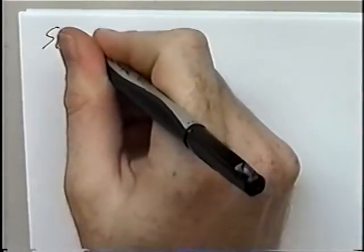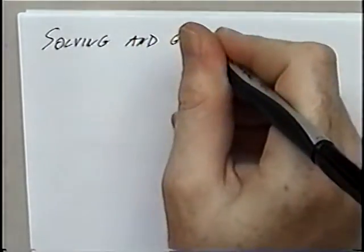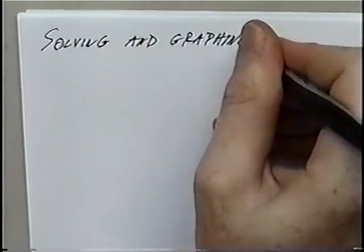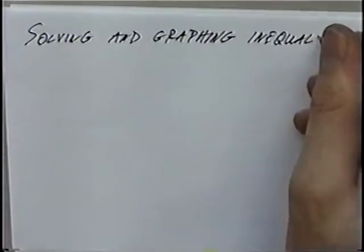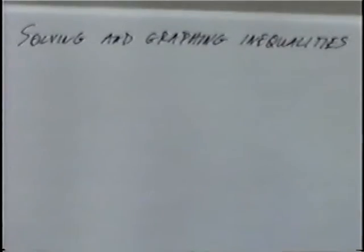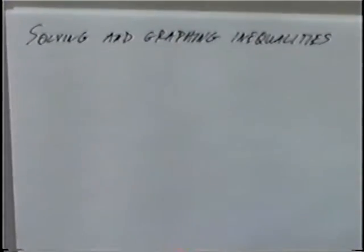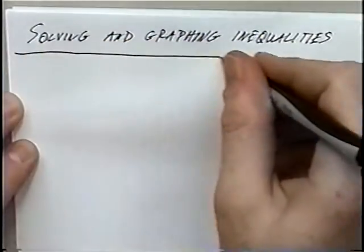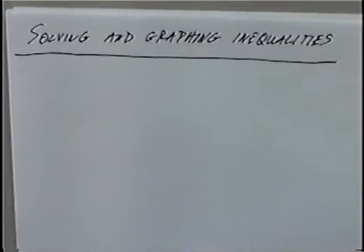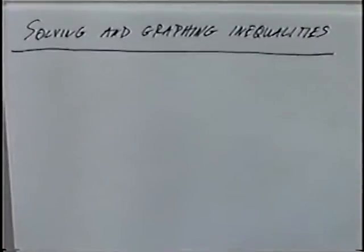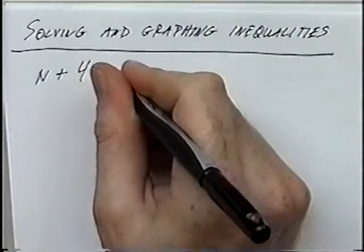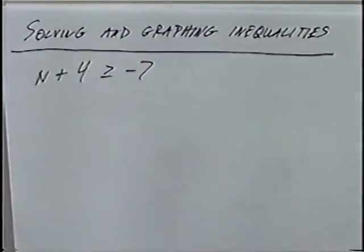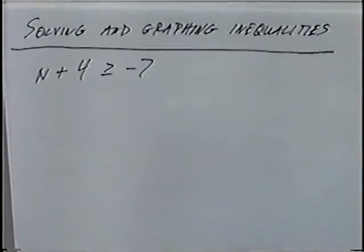The title of the next section of notes is Solving and Graphing Inequalities. In this section we'll be solving first, and our answer will allow us to graph the inequality on a number line like the previous section. The first question is n plus 4 is greater than or equal to negative 7. We'll solve the inequality, then graph on a number line.